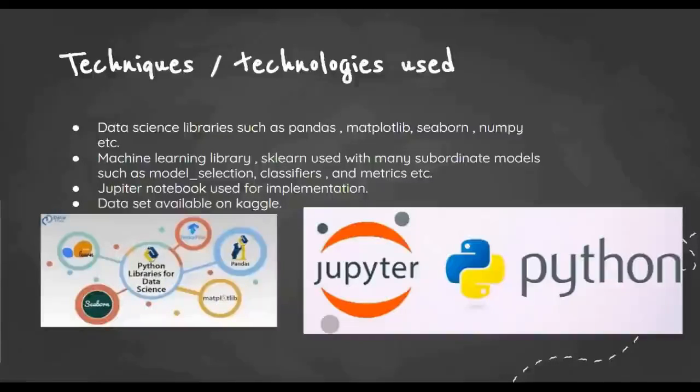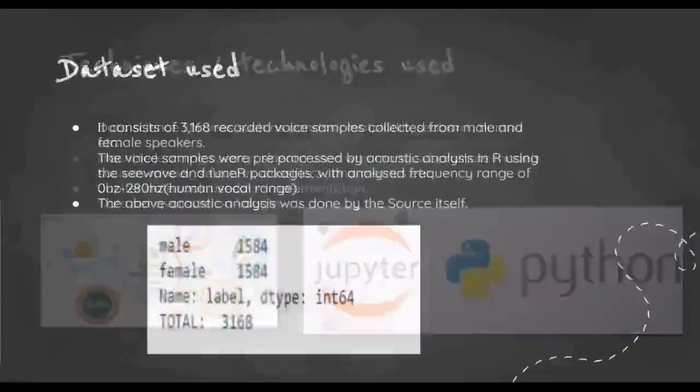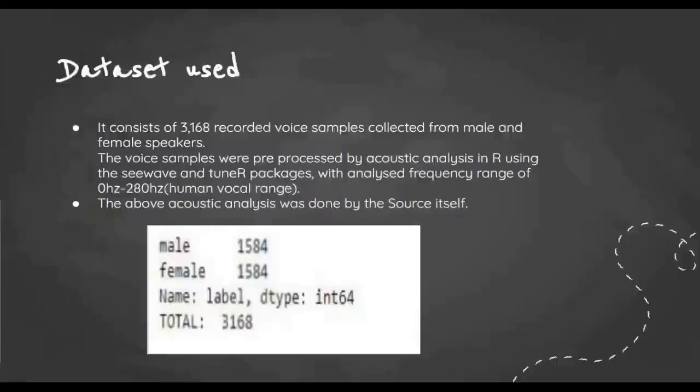The dataset used: It consists of 3,168 recorded voice samples collected from male and female speakers. The voice samples were preprocessed by acoustic analysis in R using the seewave and tuneR packages, with an extracted frequency range of 0 hertz to 280 hertz, which is the normal human vocal range. The above acoustic analysis was done by the source itself.